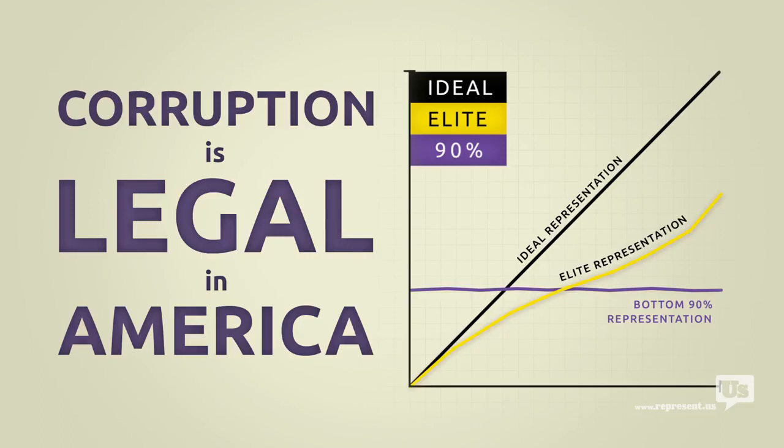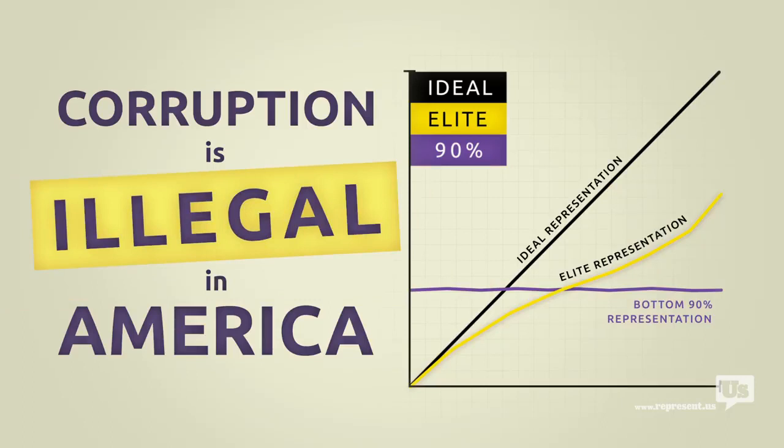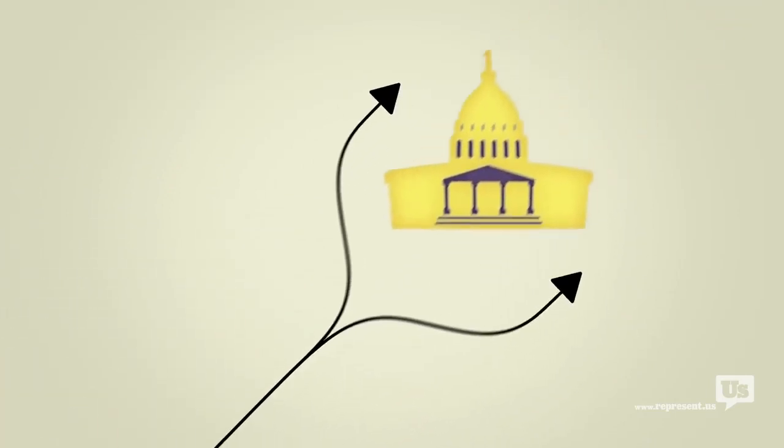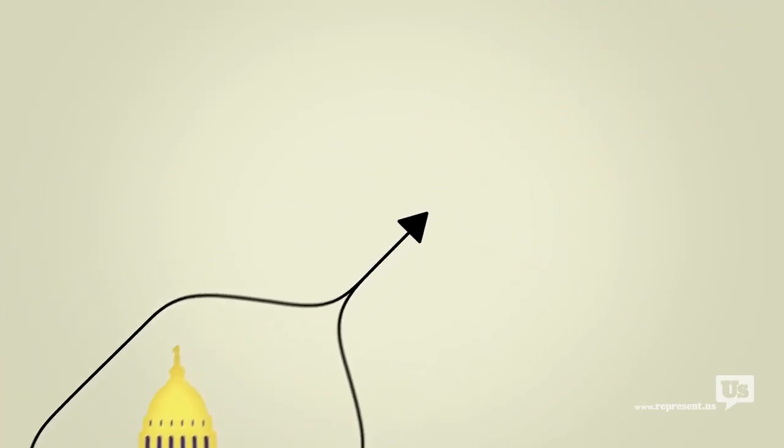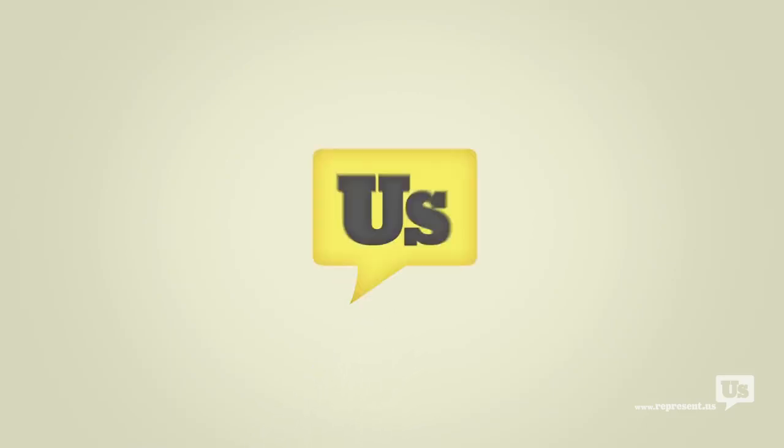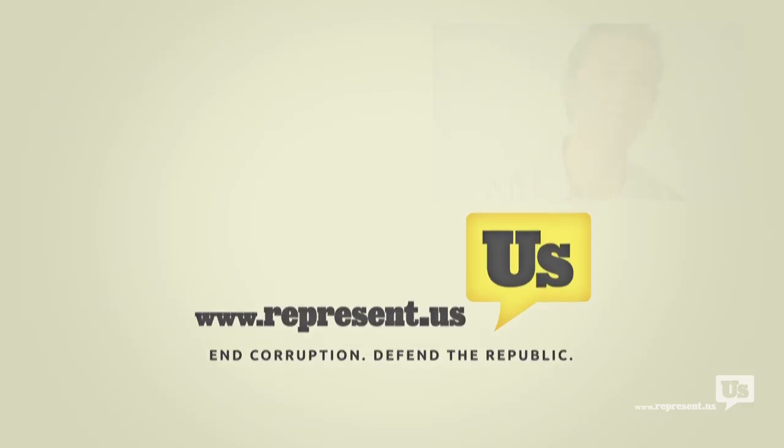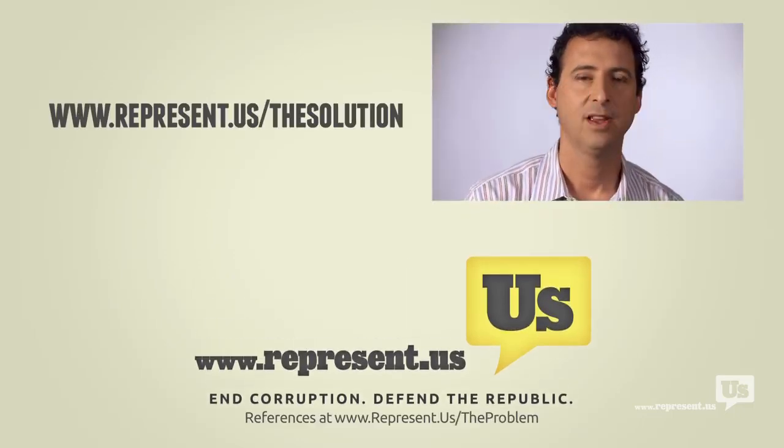The solution here isn't rocket science. Make corruption illegal. We already know Congress won't do it. I mean, one look at this chart will tell you that. What we need is a plan that lets us go around Congress and do what the American people do best. Fix this mess ourselves. Well, good news. We have that plan, and it's already working. Now that we've got the problem covered, let us show you how to be part of the solution.